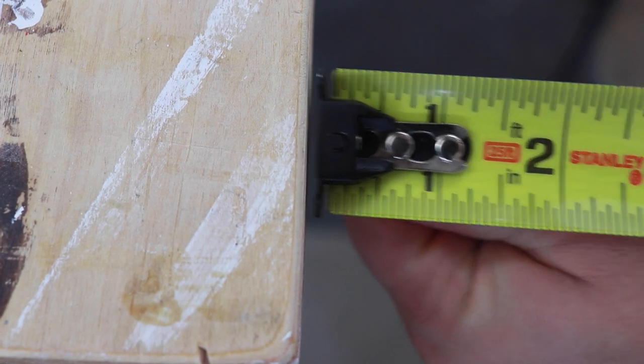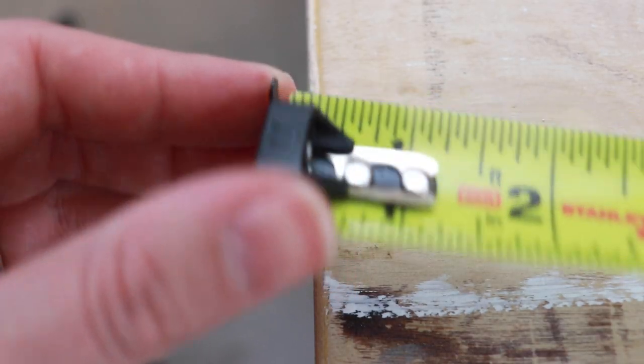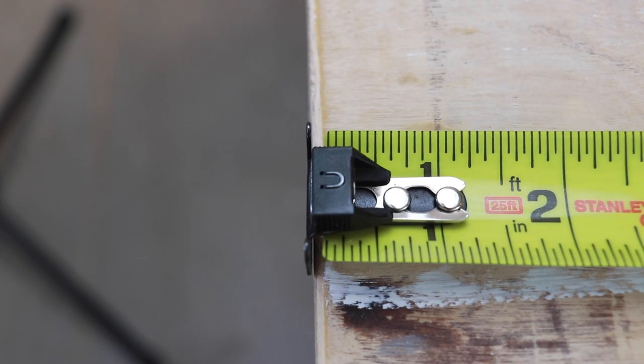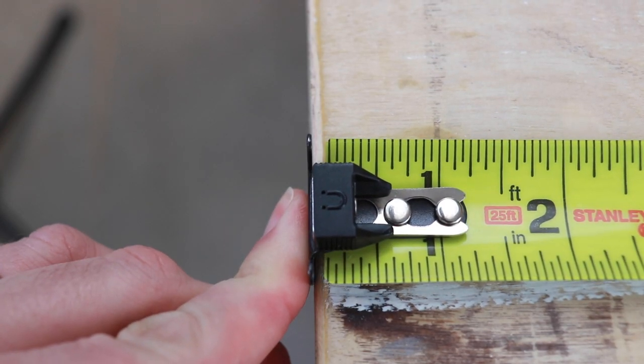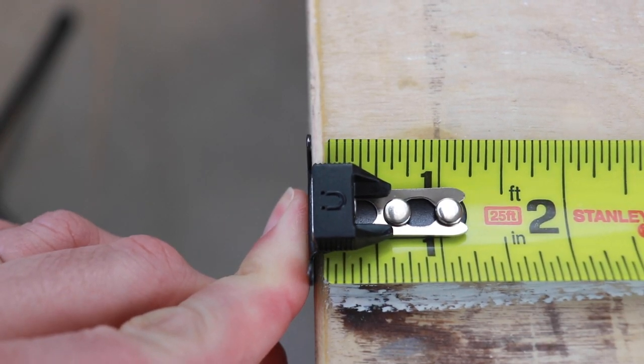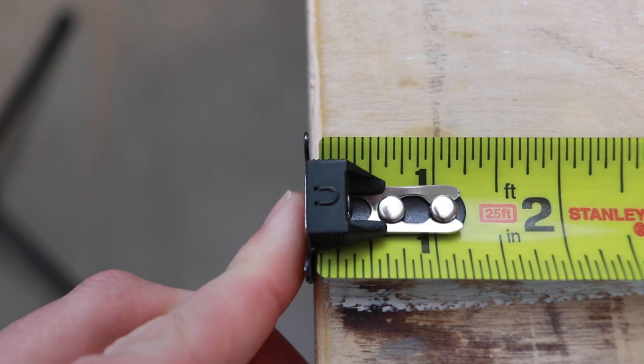The metal tip is exactly 1/16th of an inch thick. If you're measuring the outside of a surface and hook your metal end on the edge, that metal piece will shift out and create a gap so that you aren't counting it in your measurement.